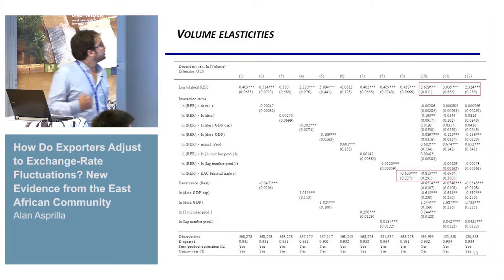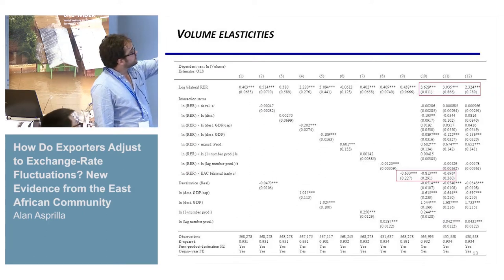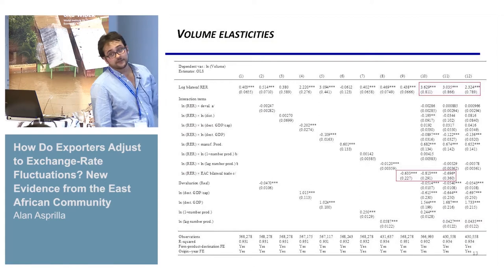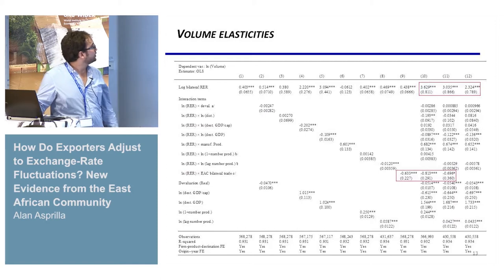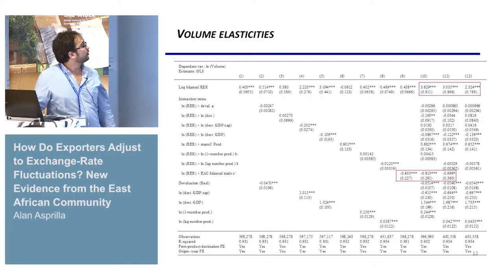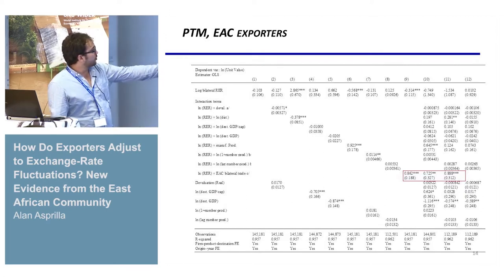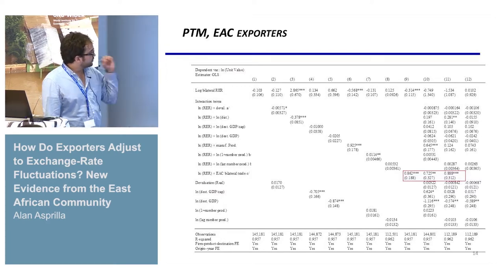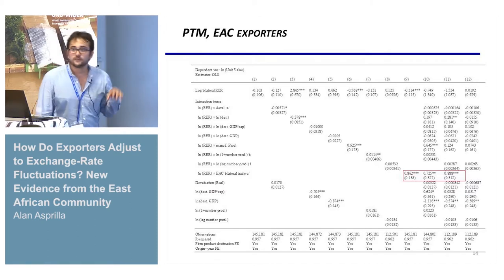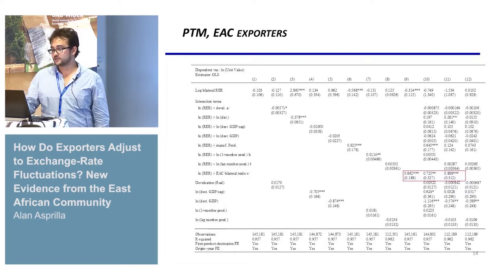The volume elasticity results are more complicated to interpret — the coefficients, when including all regressors, imply very large elasticities of substitution, so we focus mainly on prices. For EAC exporters specifically, we find no pricing to market when including all regressors for the general sample, but for intra-EAC bilateral trade we do find more pricing to market, again providing evidence of imperfect competition within the East African Community.